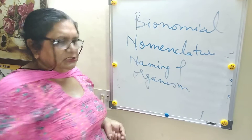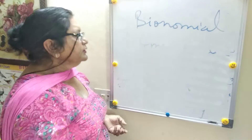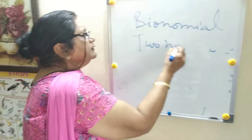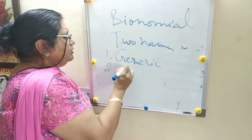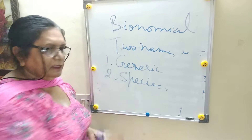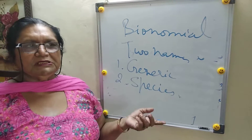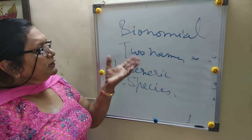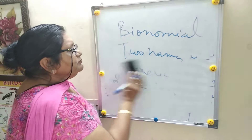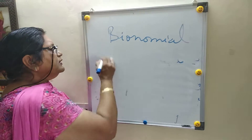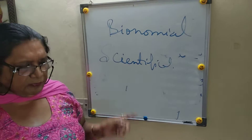Another important definition is binomial nomenclature. Binomial nomenclature means every organism on Earth consists of two names: one is called the generic name and the second is called the species name. Together they constitute binomial nomenclature. These names are called scientific names and are the same throughout the world.